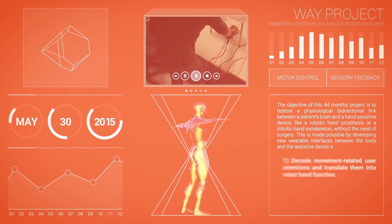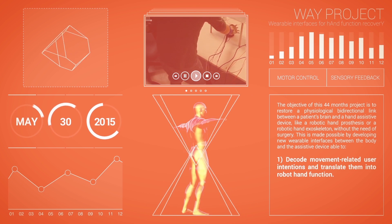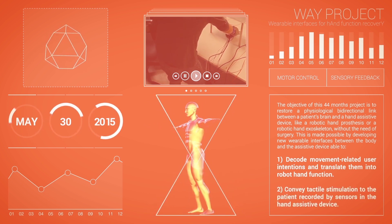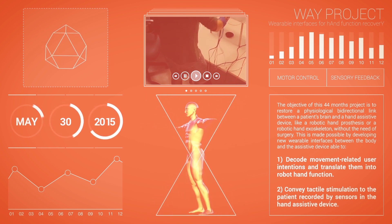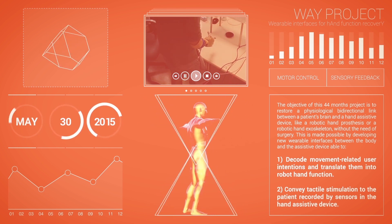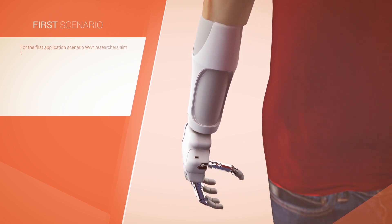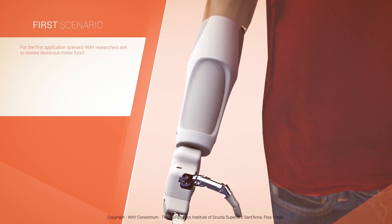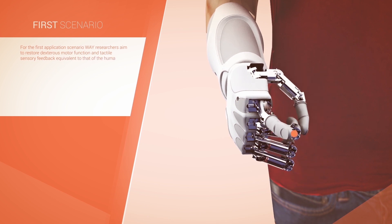This is made possible by developing new wearable interfaces between the body and the assistive device, able to decode movement-related user intentions and translate them into robot hand function, as well as convey tactile stimulation to the patient recorded by sensors in the hand assistive device.